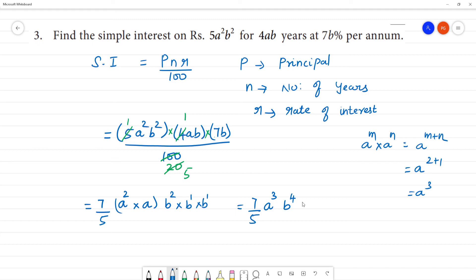This is equal to 7/5. So 7/5 a³b⁴ is your answer. This is the simple interest.